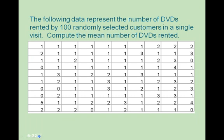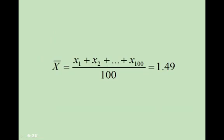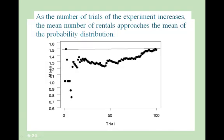The following data represent the number of DVDs rented by 100 randomly selected customers in a single visit. Computing the mean by adding all 100 values and dividing by 100, we get a value of 1.49. The graph shows that as the number of trials of the experiment increases, the mean number of rentals approaches the mean of the probability distribution.